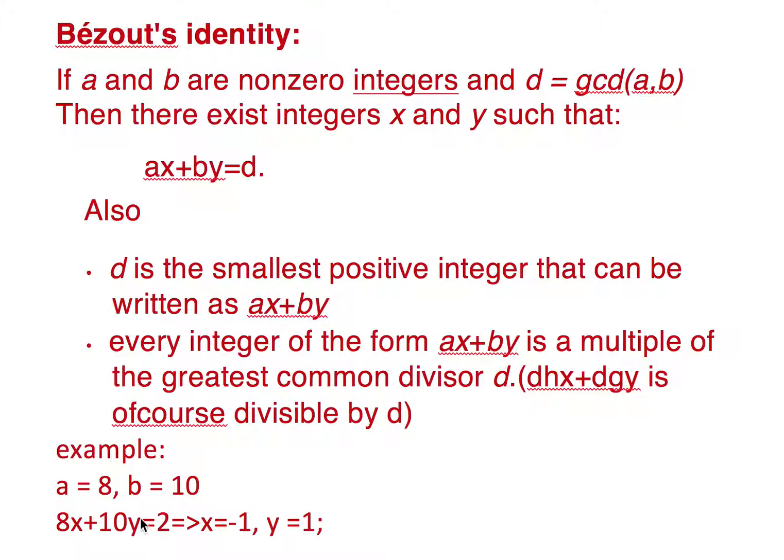So 2 is the smallest positive integer that can be written as ax plus by. One can't be written as 8x plus 10y, so there are no x and y numbers which satisfy 8x plus 10y equals 1.